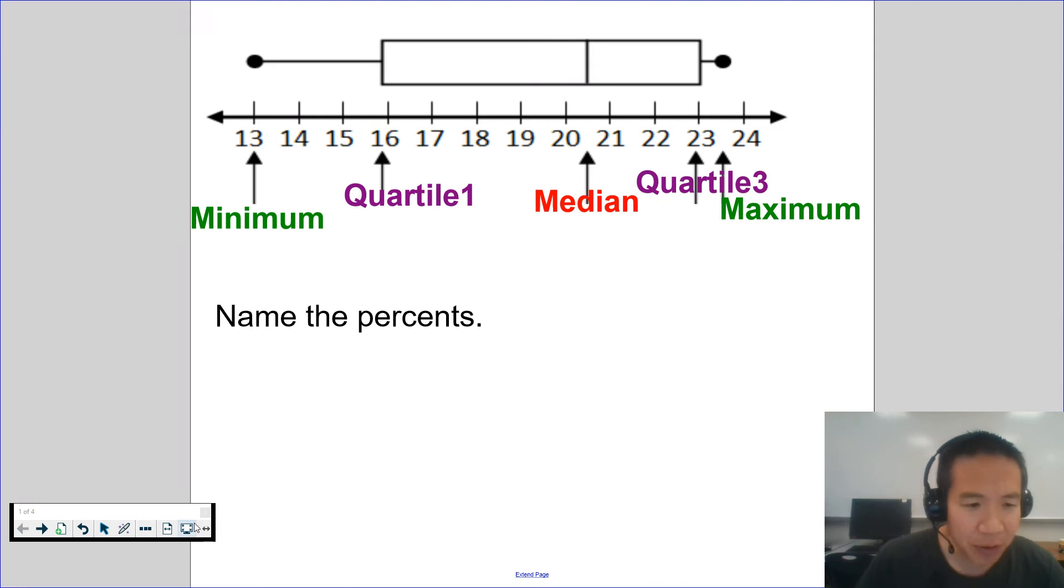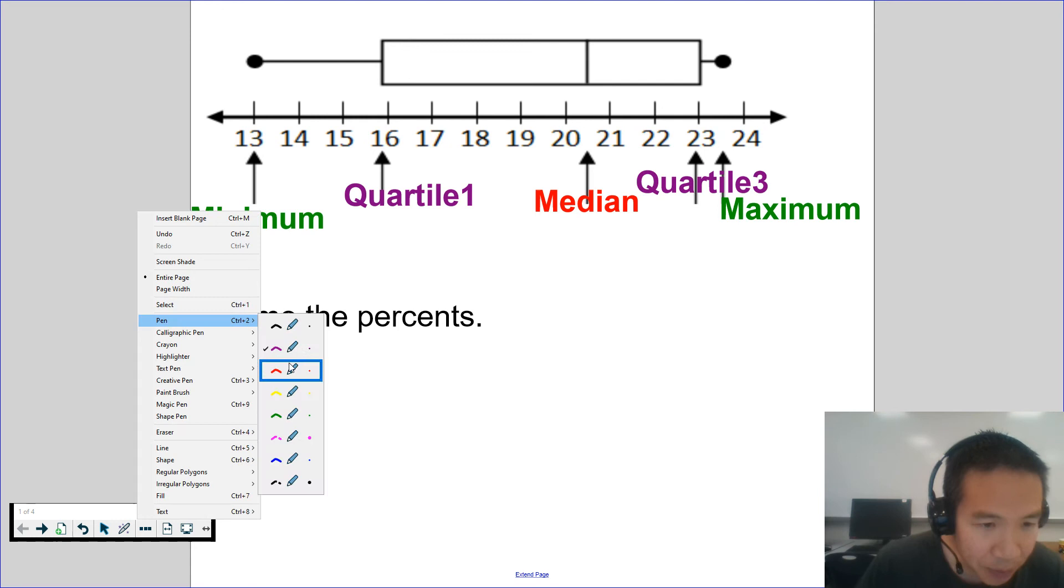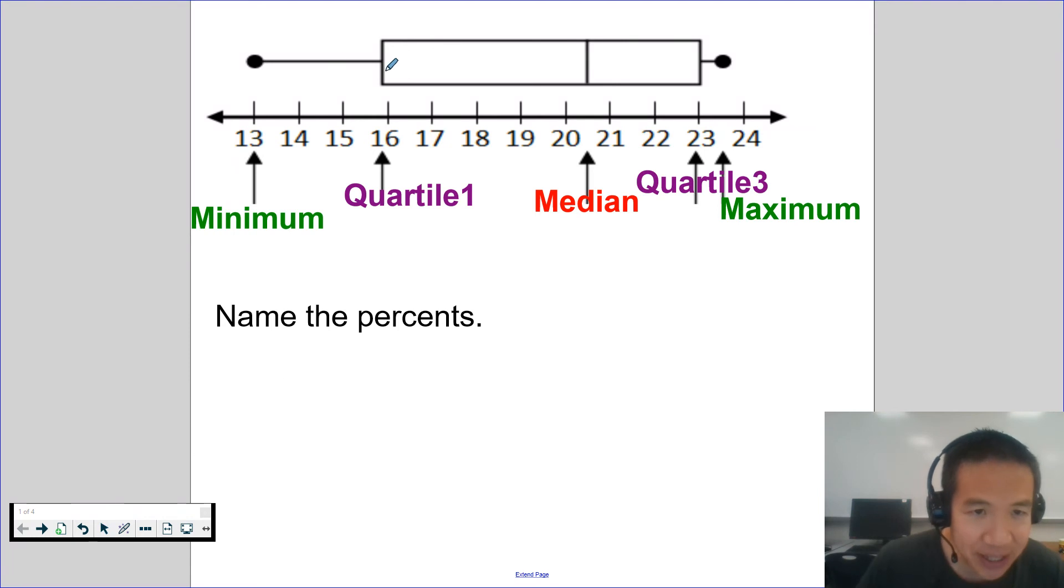And so now let's name the percents. We're going to name the percents. What percent is between 13 to 16? 25%. What percent is between 16 to 20 and a half?